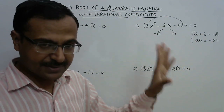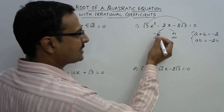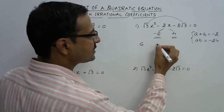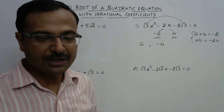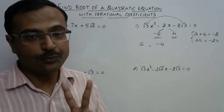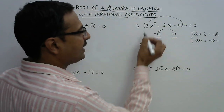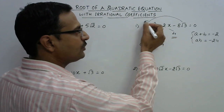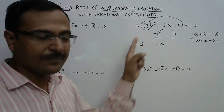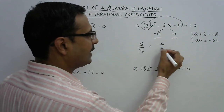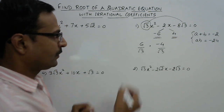Minus 6 becomes 6 and 4 becomes minus 4. So the first step was to split the middle term, the second step is to change the sign of the two factors found in the first step. The third step is to divide both these numbers by the coefficient of x². Here, the coefficient of x² is √3, so just divide 6 by √3 and divide minus 4 by √3.